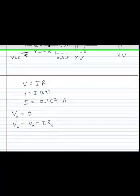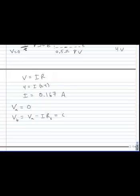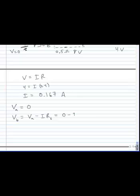A was 0, so B is going to be negative. So I've got 0 minus I times 6 ohms. And I end up with negative 1 volt.